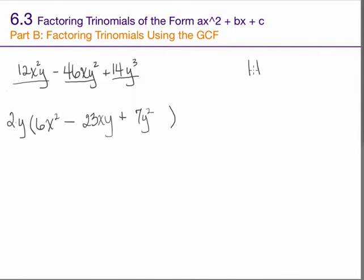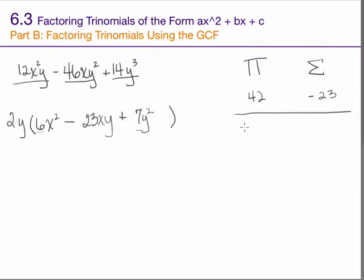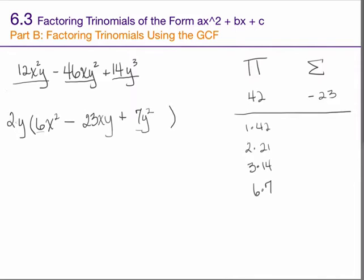I'll proceed as always, finding my product and sum. My product is 6 times 7, which is 42, and my sum is negative 23. How can I build 42 as a product of two numbers? 1 times 42, 2 times 21, 3 times 14, 4 doesn't work, 5 doesn't work, 6 times 7. The sums are: 43, 23 — and that's as far as I need to go because I've found the magnitude I need. I could continue with 17 and 13, but I don't care since I've found the relevant pair.